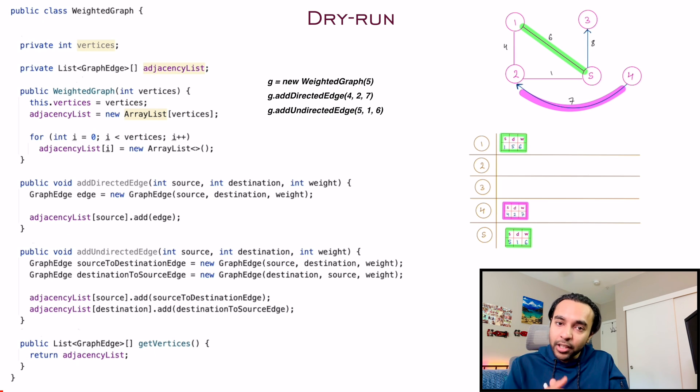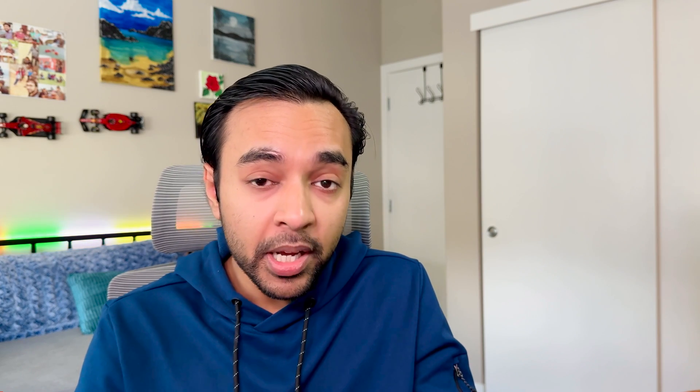Or you can also try to do it as a homework on your own. You will find some more examples in the given code also. I hope now you have a better understanding about how you can implement a weighted graph and a directed graph.